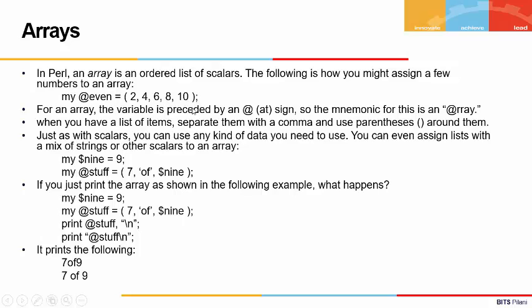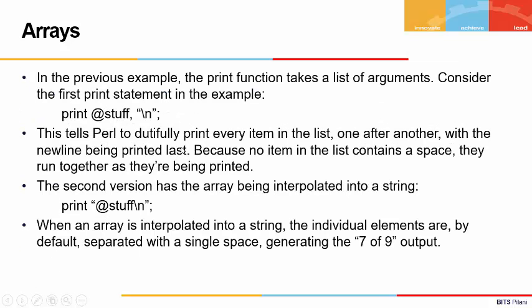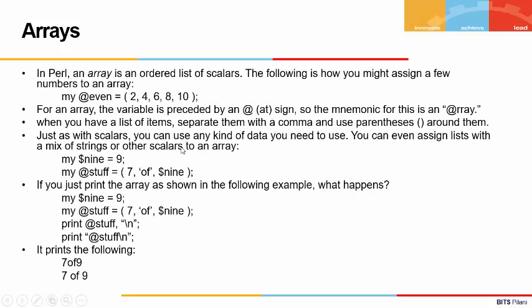When you have a list of items to assign to an array, the elements must be separated with commas and enclosed within parentheses, ending with a semicolon. You can also use a scalar variable as one of the elements when declaring an array — this is one of the nice features of Perl.